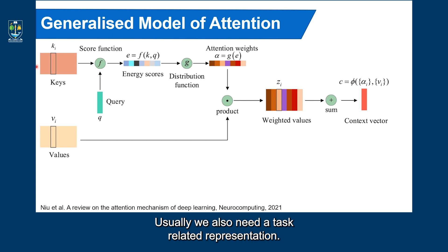Usually we also need a task related representation, which we call the query, just like the previous hidden state of the output. Then the neural network computes the correlation between queries and keys through a score function F, which is called the energy function. And in this way, it estimates the energy scores that reflect the importance of queries with respect to keys in deciding the next output.